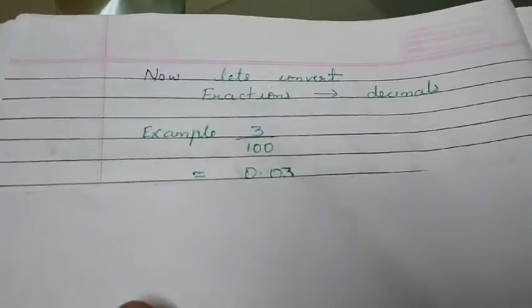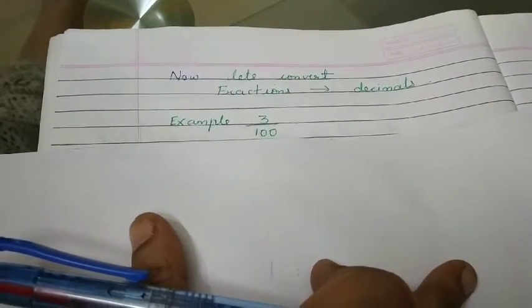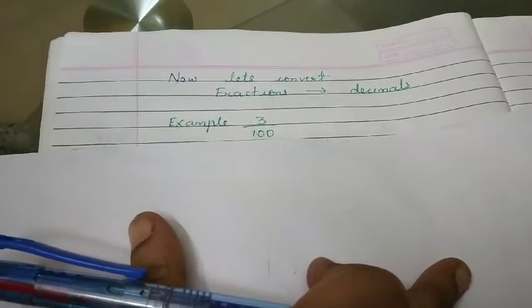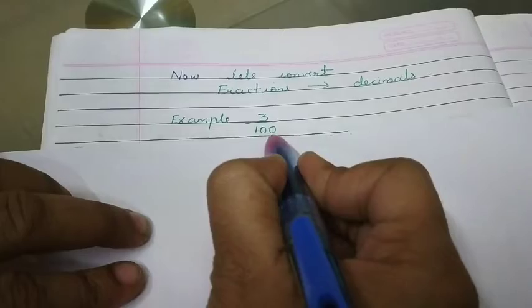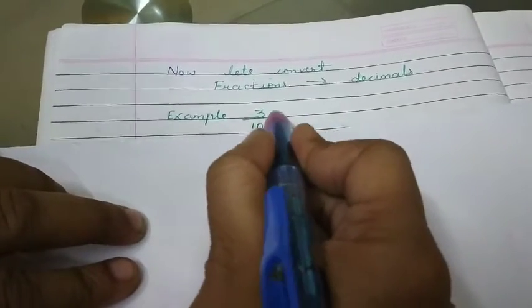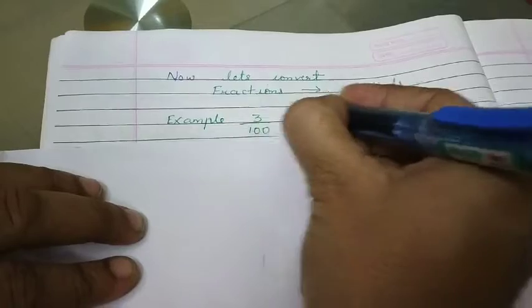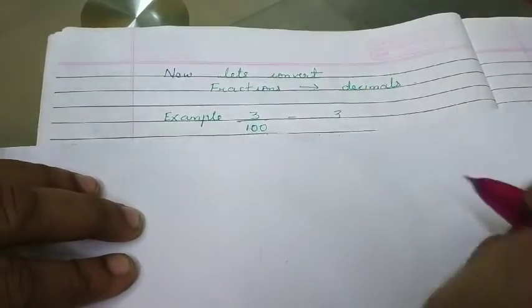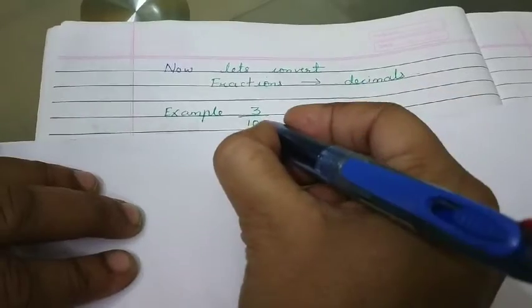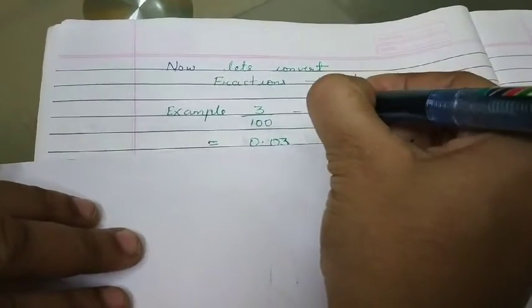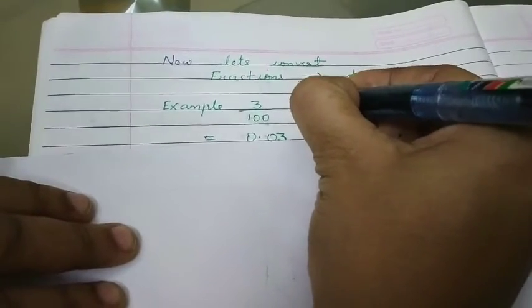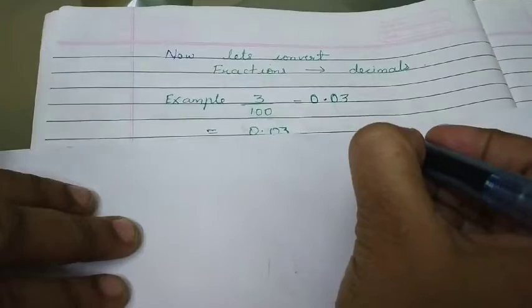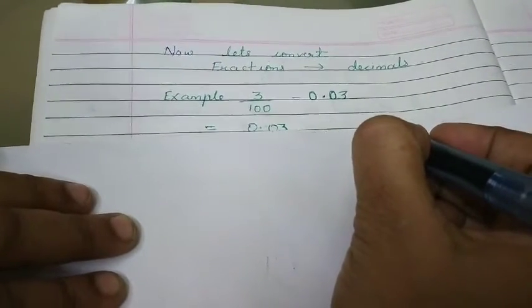For example, we have taken 3 upon 100. If we want to convert 3 upon 100, now we will have to see how many zeros are there in denominator. And then, we have to see the number in numerator. Write the number as it is in the answer of numerator. Now, we can see there are two zeros, so we just have to put one zero before 3 and we have to give decimal and one more zero. So, answer becomes 0.03.